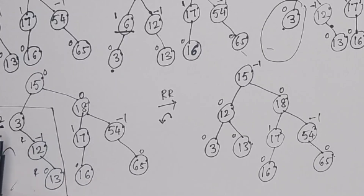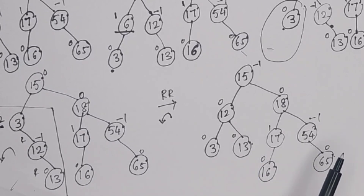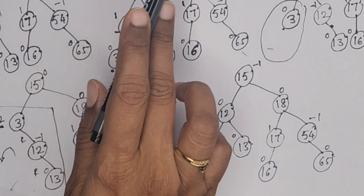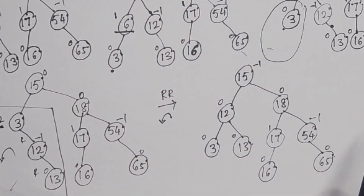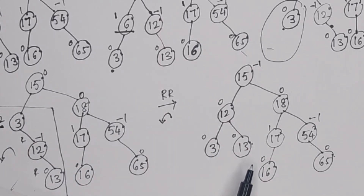If the tree is unbalanced after deleting any element, we have to balance it first, and then only we can remove the next element. That is the difference between binary search tree deletion and AVL tree deletion. Deletion is the same as in a binary search tree, but after deletion you have to write balance factors, and if it is unbalanced, you must balance the tree.